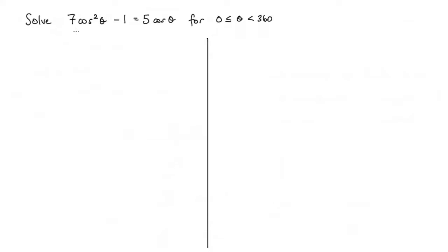In this question, we're asked to solve 7 cos squared theta minus 1 is equal to 5 cos theta. And we have to do that for all values of theta between 0 and 360.